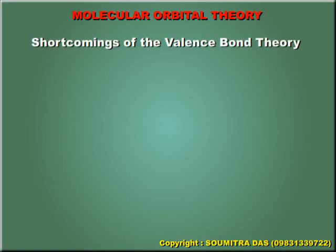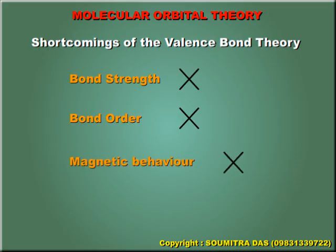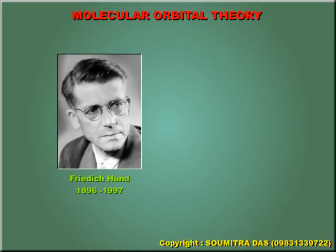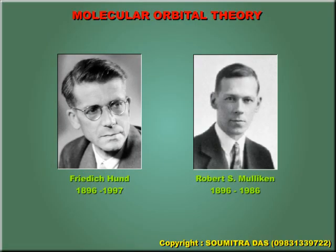Valence bond theory could not explain clearly the bond strength, bond order and magnetic behavior of molecules. Thus, a new theory called the molecular orbital theory was introduced by Friedrich Hund and Robert S. Mulliken in 1932.